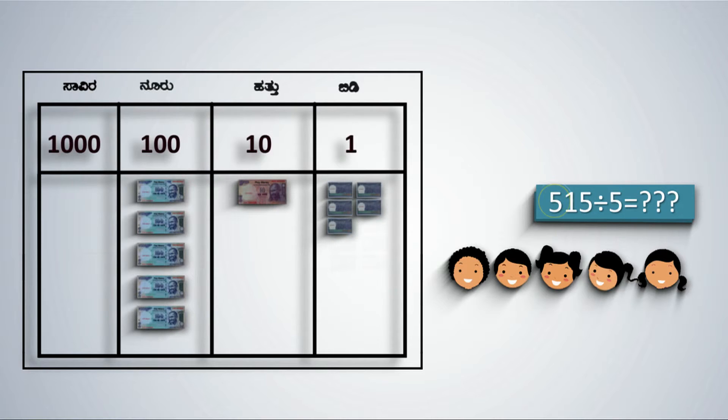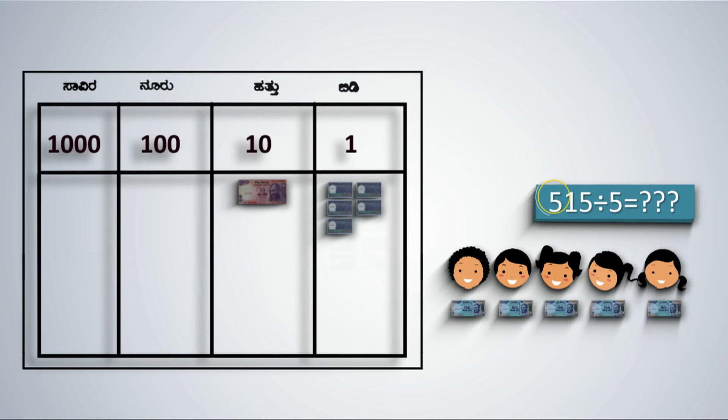Starting from the highest place value, when 5 hundreds are divided amongst 5, each one gets 1 hundred rupee note. Remind students of the division fact that when a number is divided by itself, the answer is 1. Now, all 100 rupee notes have been distributed and we are left with none.